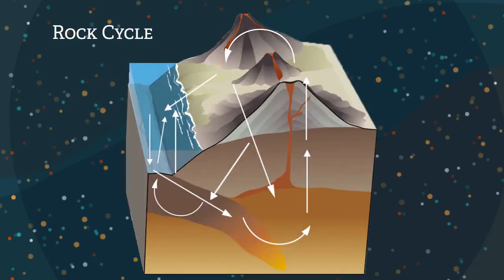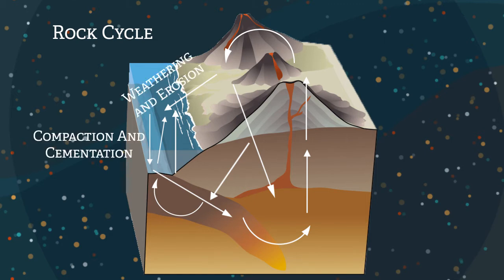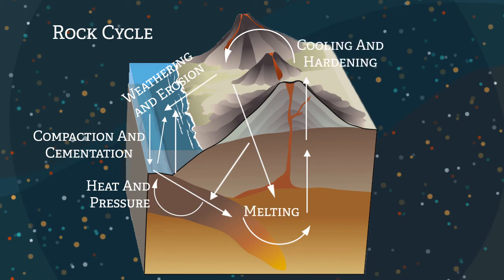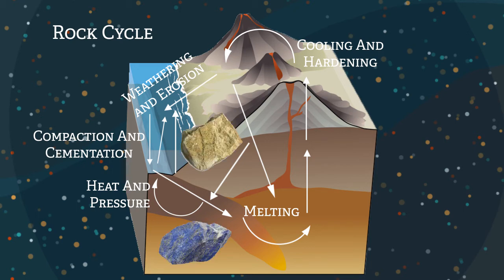The rock cycle has many steps to it. It has weathering and erosion, compacting and cementing, heat and pressure, melting, and cooling and hardening. Then there are stages to the rock cycle: sedimentary rock, metamorphic rock, igneous rock, magma, and sediments.